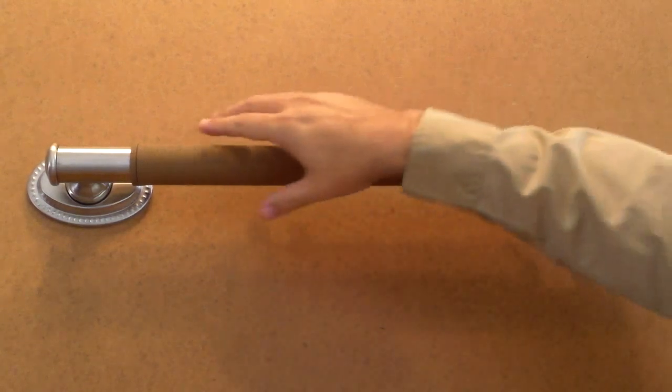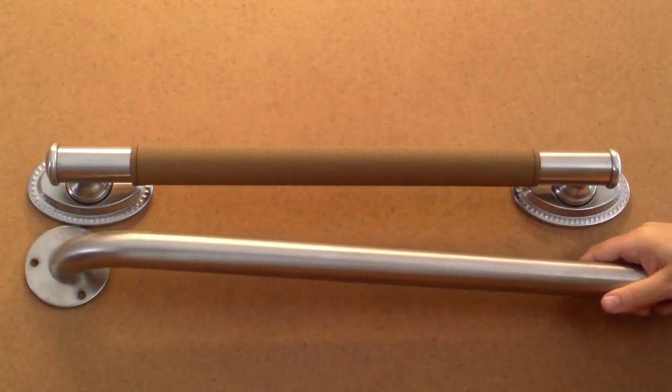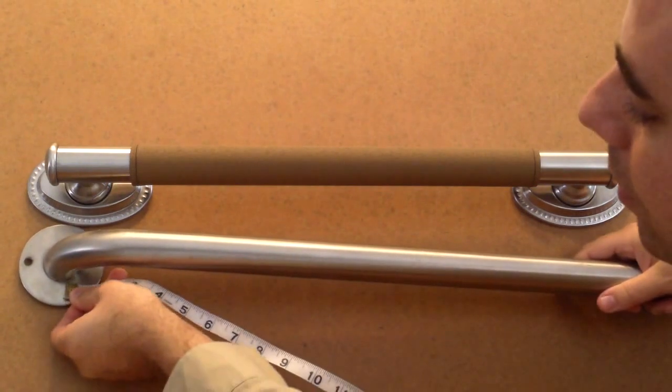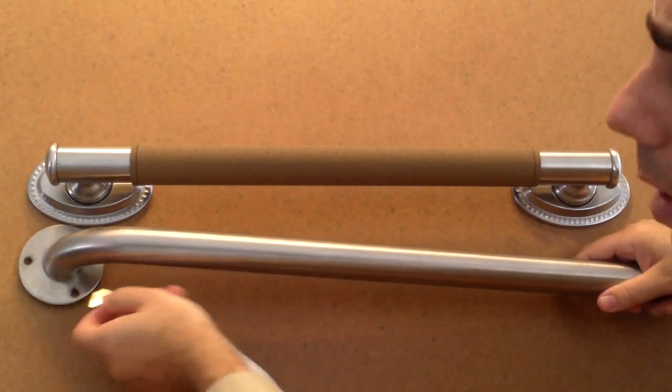Not all grab bars are straight. Some of these are curved. And what we do in that case, we measure from the center of this post to the center of the opposite post.